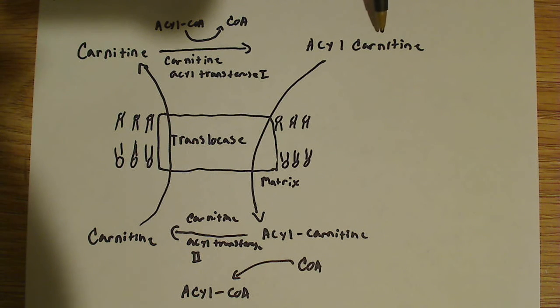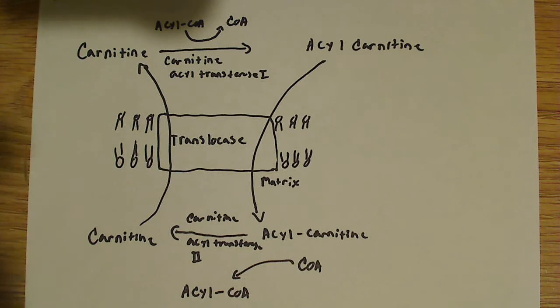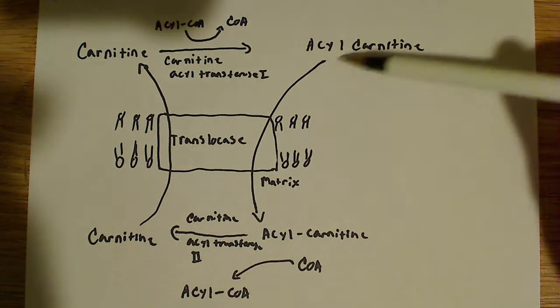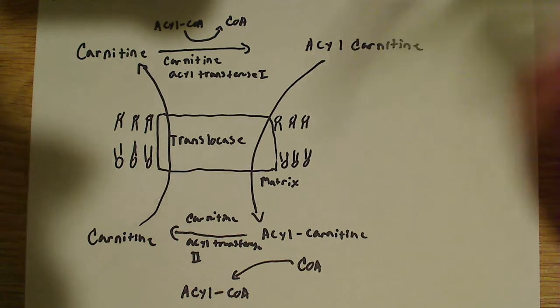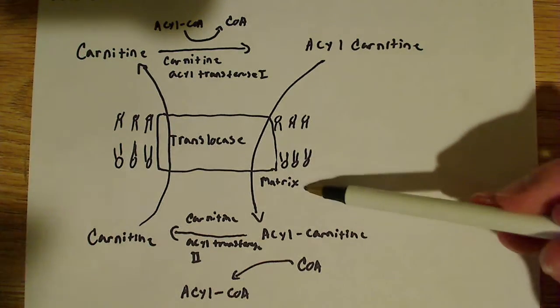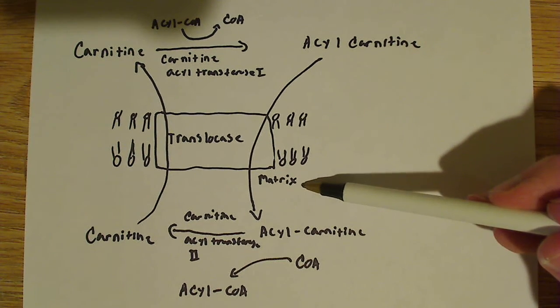Now the thing about that is it's permeable to the membrane. It can cross the membrane. It can cross through this translocase. It can use this translocase and cross through. So that's what's going to happen. So essentially what you're going to do is you're going to replace the CoA with carnitine. Acyl-carnitine is going to cross the membrane, enter the matrix. I have it labeled as the matrix here.